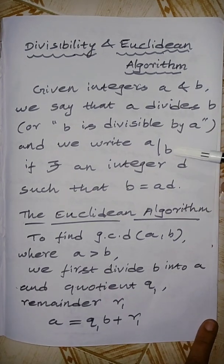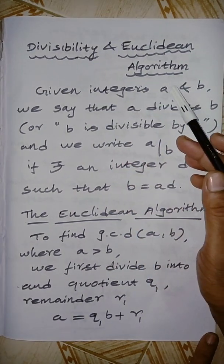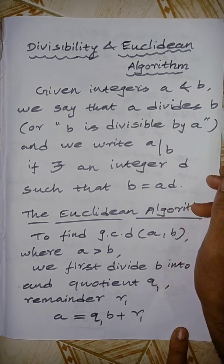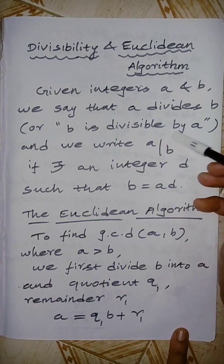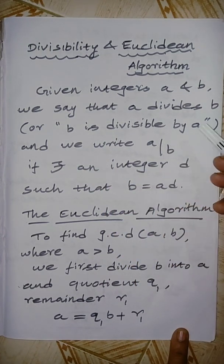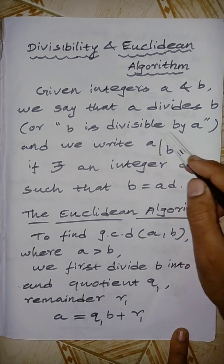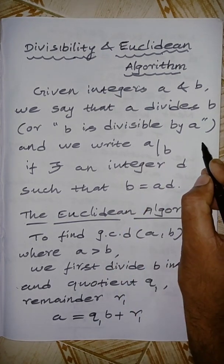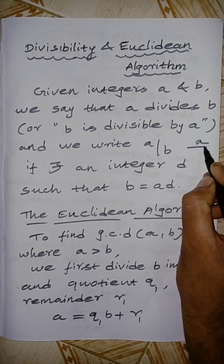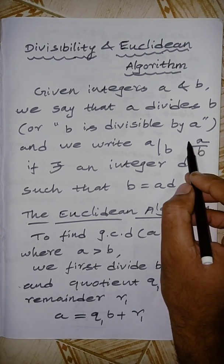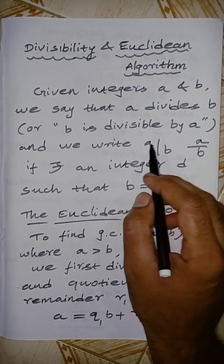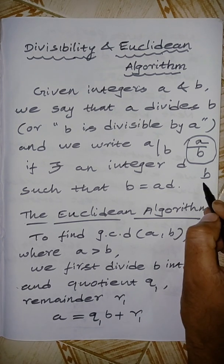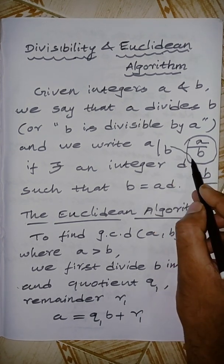This is very easy to understand. Given integers a and b, we say that a divides b, or b is divisible by a, and we write a | b in notation. Note that a | b is entirely different from a/b — they are not equal.